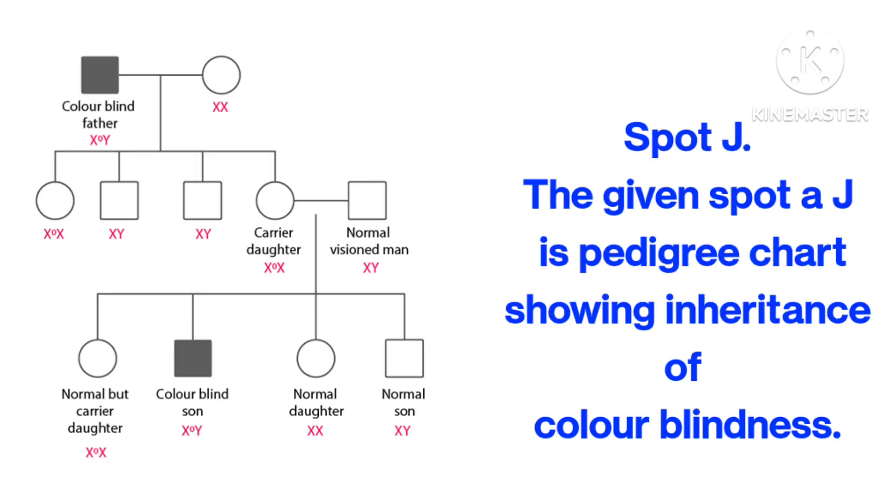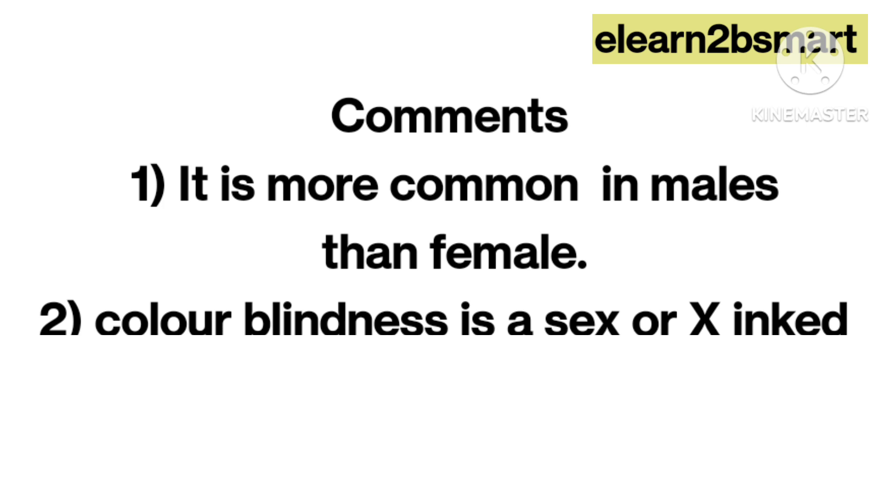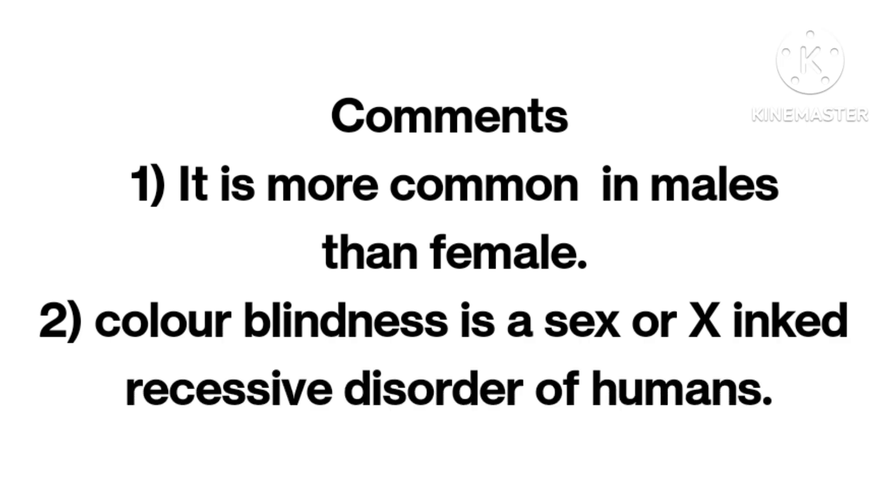Spot J. The given spot J is pedigree chart showing inheritance of color blindness. Comments: It is more common in males than females. Color blindness is a sex-linked recessive disorder in humans.